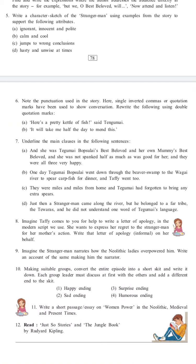Question 7: Underline the main clauses in the following sentences. A. 'And she was Tegumai Bobsulai's best beloved and her own mummy's best beloved, and she was not spanked half as much as was good for her, and they were all three very happy.' B. 'One day Tegumai Bobsulai went down through the beaver's swamp to the Wagai River to spear carp fish for dinner, and Taffi went too.' C. 'They were miles and miles from home and Tegumai had forgotten to bring any extra spears.' D. 'Just then a stranger man came along the river, but he belonged to a far tribe, the Teveras, and he did not understand one word of Tegumai's language.'